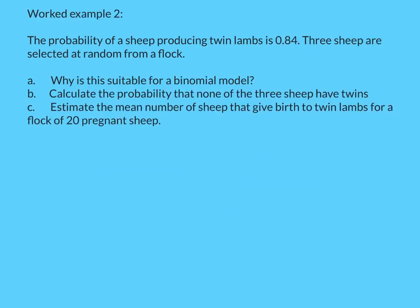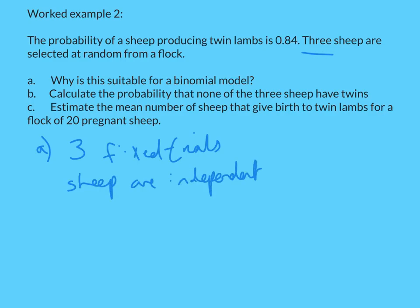One more worked example. We're looking at some sheep in a field — you've got three sheep. We're asked: why is this suitable for binomial? We go back to our three conditions. First, there are a fixed number of trials — three fixed trials. Second, each sheep is independent of each other — sheep are independent. Third, there are two possible outcomes: either they'll have twins or not twins. All three conditions are met, so it is suitable for binomial.